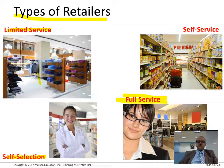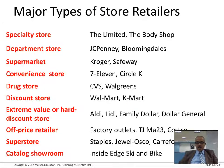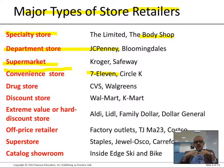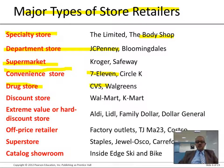Major types of store retailers include: specialty stores like The Body Shop, which only do personal care; department stores with multiple departments; supermarkets for grocery shopping; convenience stores like 7-Eleven that carry convenient goods; drug stores like CVS with medication and self-service options; and discount stores that sell at reduced prices.